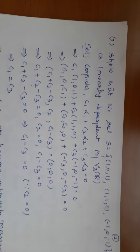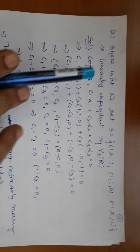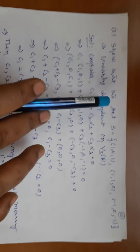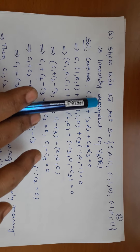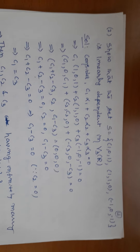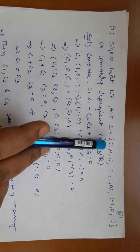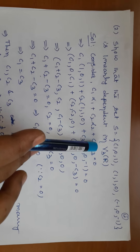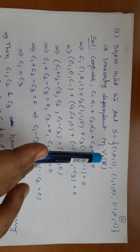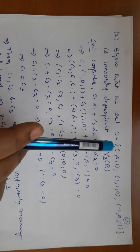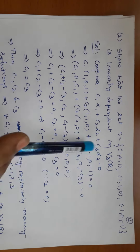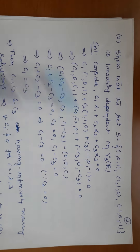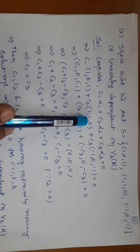Now I am going to take one problem on linearly dependent. Consider the problem: show that the set S = {(1,0,1), (1,0,-1), (0,-1,-1)} is linearly dependent in V3 of R, meaning V is a vector space over real numbers with dimension 3. First, consider C1 alpha 1 plus C2 alpha 2 plus C3 alpha 3 equals 0. Substitute alpha 1, alpha 2, alpha 3, multiply by C1, C2, C3 respectively, then add the corresponding components. We get: C1 plus C2 minus C3, then 0 plus C2 plus 0, and C1 plus 0 minus C3.